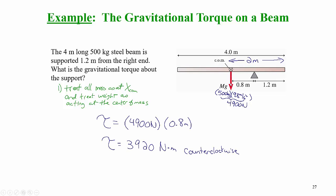The force of gravity is 4,900 newtons. We would break it into components, but here all of the force of gravity is perpendicular to the r vector, which points from the pivot point to where the force is being applied. So the torque due to this gravitational force is 4,900 newtons times 0.8 meters. The gravitational torque is 3,920 newton meters — the units for torque are newton meters — and this torque is counterclockwise, as this weight would cause the beam to rotate counterclockwise around the pivot point.